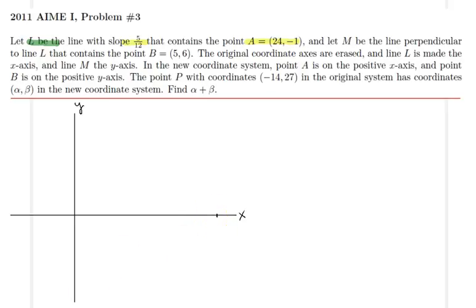So probably, let's use this color. So 24, minus 1 will be somewhere here at this point. Let's call it A, 24, minus 1.